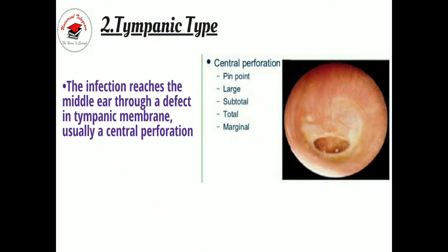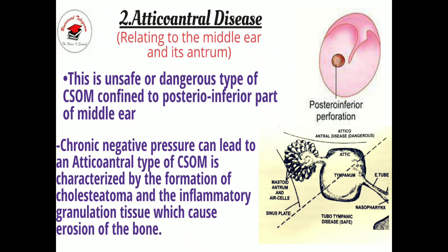Moving forward to the second type of CSOM — the atticoantral disease — it is a very unsafe or dangerous type. In detail, it relates to the middle ear and its antrum. This unsafe type is confined to the posterior inferior part of the middle ear. It is considered dangerous because the posterior inferior part also consists of mastoid air cells; the mastoid bone is located just behind the middle ear.